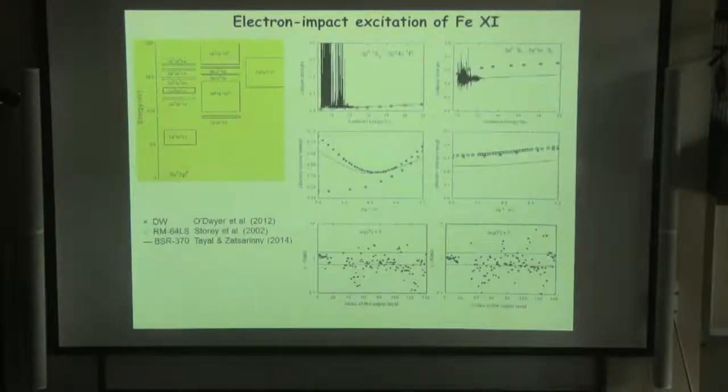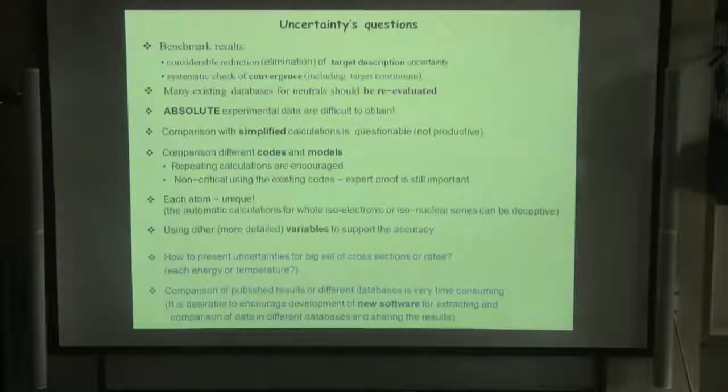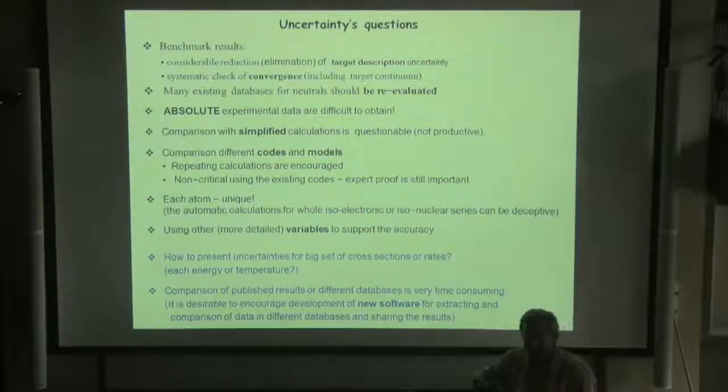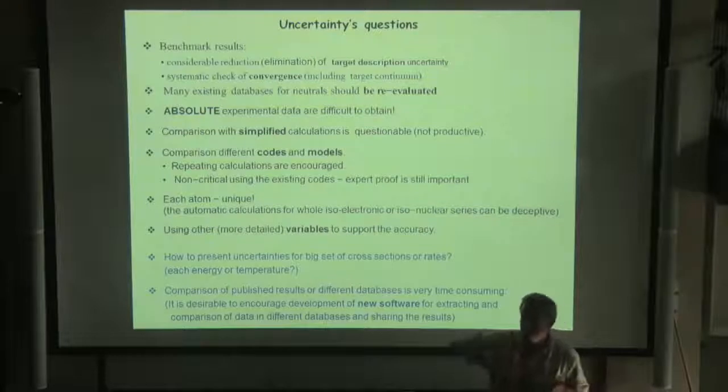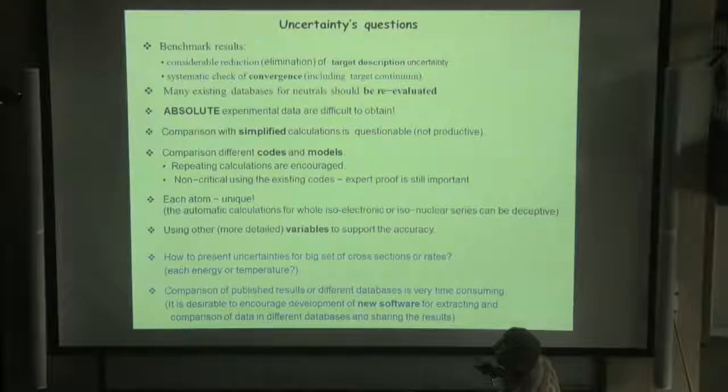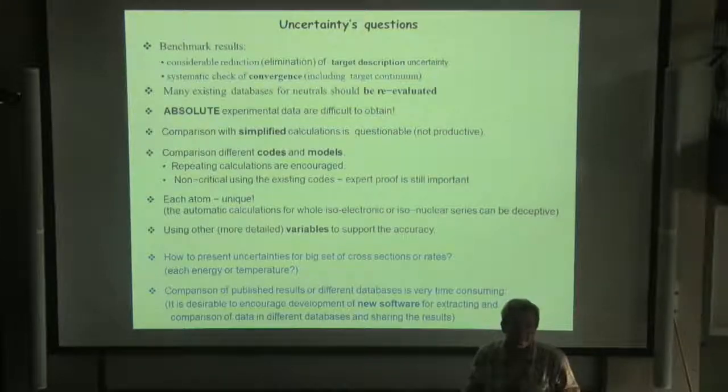Summary - no summary here, just repetition of what we said in closed form. I just want to state on some concluding questions that I'm thinking about when I prepare my talk. So we provide many benchmark results that can be used for uncertainty estimation. And in our approach, considerable reduction and elimination of target discrepancy uncertainty. And we systematically check the convergence of cross-sections. I believe there is no other way to provide good uncertainty without systematically checking and providing many calculations.